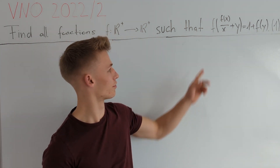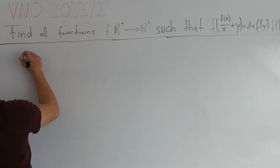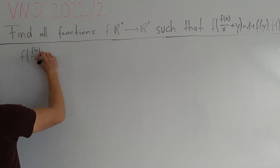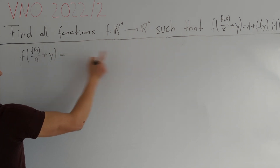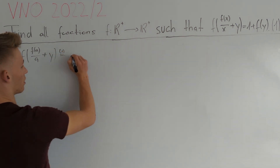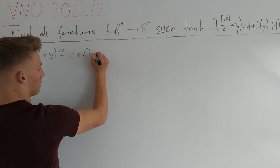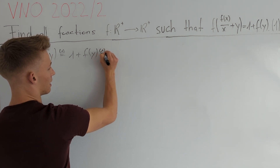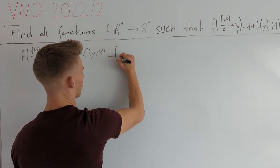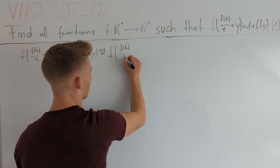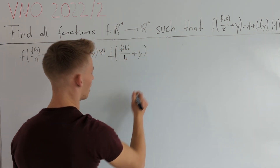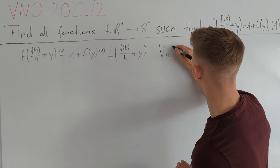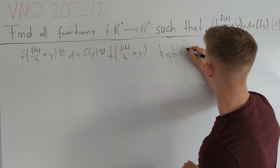So let's do this and call the values for x: a and b. We get that f(f(a)/a + y), by our equation 1, is equal to 1 + f(y). Now we use equation 1 a second time to get that this equals f(f(b)/b + y). And we know that this holds for every a and b from the positive real numbers.